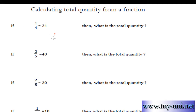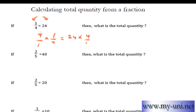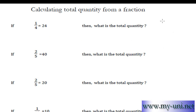Let me do it again. One-fourth is equal to 24. To convert this side of the equation to a whole quantity, you have to multiply it by the reciprocal fraction of one-fourth, which is 4 over 1. And when you do that to this side of the equation, you have to do the same thing to the other side as well — multiply 24 by 4 over 1. So these will cancel out, this side becomes 1 over 1, and 24 times 4 is equal to 96 over 1. So 96 is your answer.